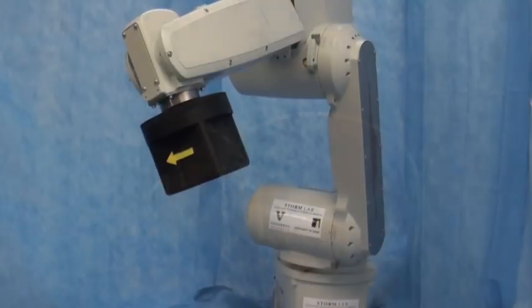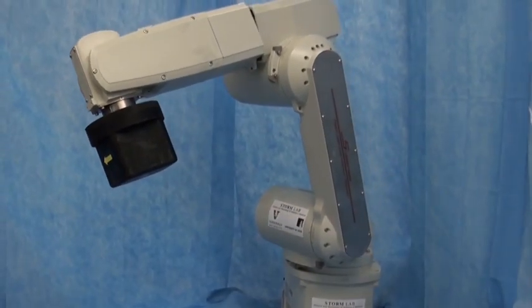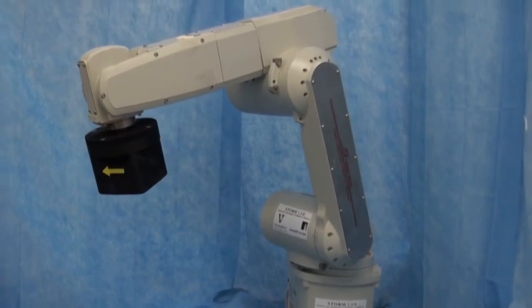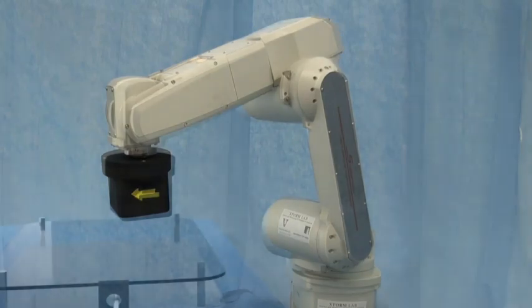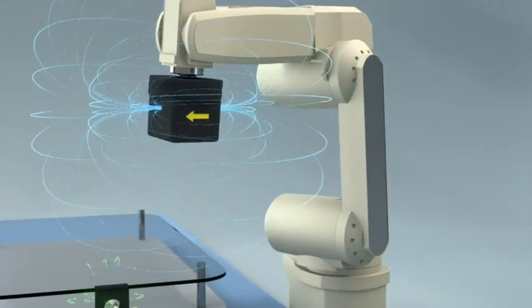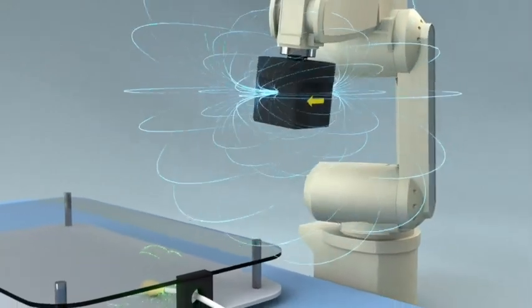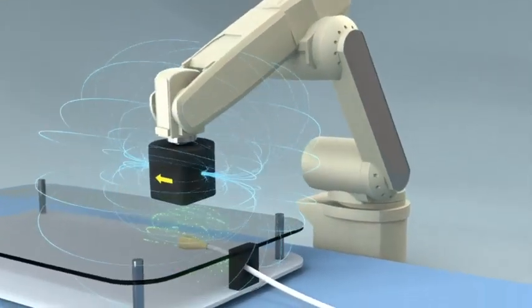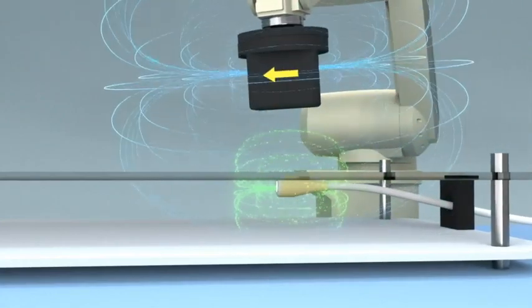The actuating magnet is manipulated in 6 degrees of freedom by a serial robotic arm. Knowledge of the residual flux density and geometry of the actuating permanent magnet as well as proprioceptive sensing in the head are utilized via a localization algorithm to obtain both the position and orientation or pose of the endoscope's tip.